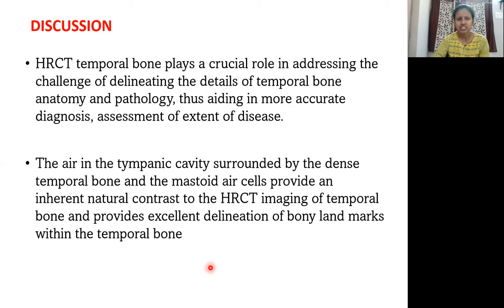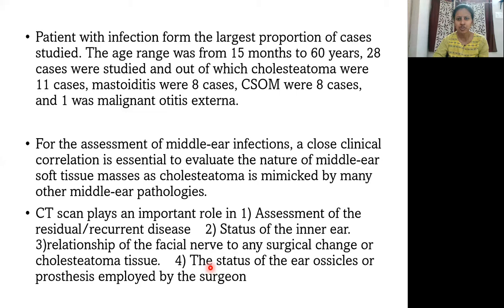HRCT temporal bone plays a crucial role in addressing the challenge of delineating the details of temporal bone anatomy and pathology, thus aiding in more accurate diagnosis and assessment of extent of disease. The air in the tympanic cavity surrounded by the dense temporal bone and the mastoid air cells provide an inherent natural contrast to HRCT imaging. Patients with infection form the largest proportion of cases studied, age range 15 months to 60 years. Of 28 infection cases: cholesteatoma 11, mastoiditis 8, CSOM 8, and 1 malignant otitis externa. For assessment of middle ear infection, close clinical correlation is essential to evaluate the nature of middle ear soft tissue masses, as cholesteatoma is mimicked by many other middle ear pathologies. CT scan plays an important role in assessment of residual or recurrent disease, status of inner ear, and relationship of the facial nerve to any surgical change or cholesteatoma.